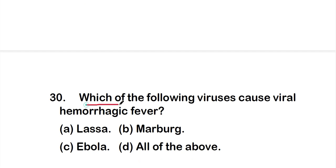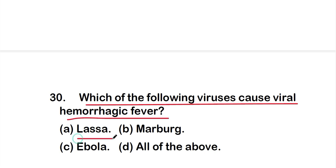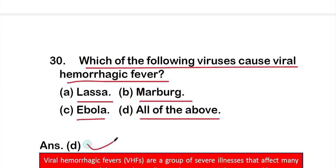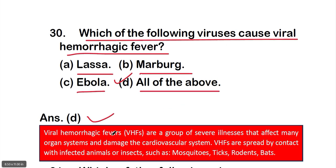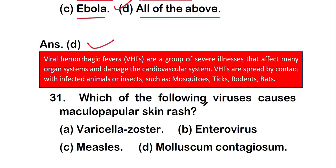Question 30: Which of the following viruses cause viral hemorrhagic fever? Option A: Lassa, option B: Marburg, option C: Ebola, or option D: all of the above. The right answer is option D — all of these viruses can cause viral hemorrhagic fever. Viral hemorrhagic fevers are a group of severe illnesses that affect many organ systems, damage the cardiovascular system, and are spread by contact with infected animals or insects such as mosquitoes, ticks, rodents, and bats.